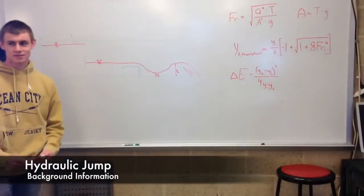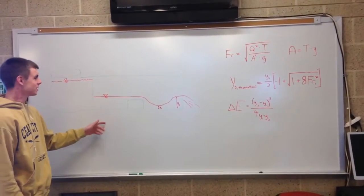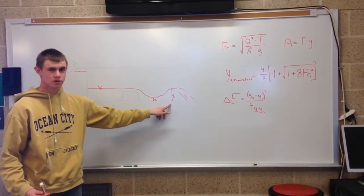So this is the process of classifying the jump. Here's your diagram of what's going on with the water flowing over the weir. This is your y1, your y2 that you measured.